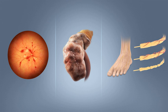Type 3 diabetes is a name used by some researchers for Alzheimer's disease, as there is evidence that insulin resistance in the brain plays a role in the latter. It is not formally recognized as a form of diabetes.